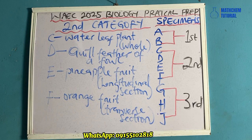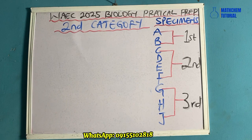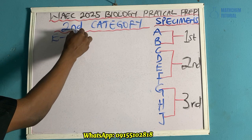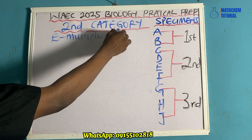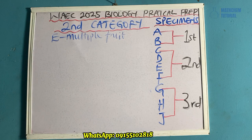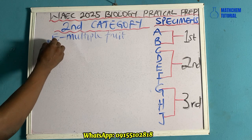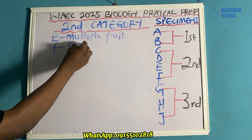Another question they can ask you from this second category is that you should identify the type of fruits in specimen E and F. Specimen E is a multiple fruit, while specimen F is a simple fruit. So if asked to identify the type of fruit in specimen E and specimen F: specimen E is multiple fruits and specimen F is simple fruits.